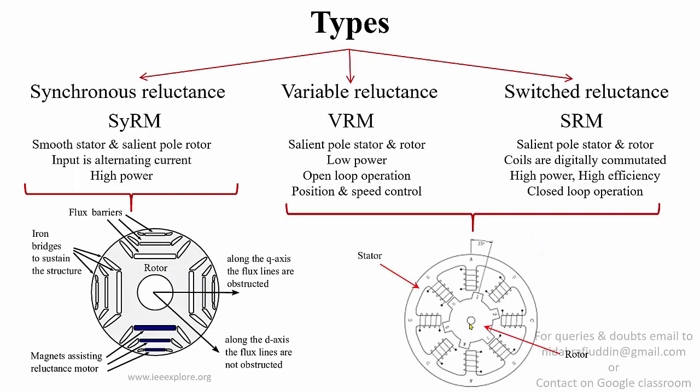Reluctance motors are of three types: synchronous reluctance, variable reluctance, and switched reluctance, abbreviated as SYRM, VRM, and SRM respectively. Each of these has different operating applications. The synchronous reluctance motor has a salient rotor and a smooth stator similar to an induction motor, while both the variable reluctance motor and the switched reluctance motor have salient pole rotors and stators. The synchronous reluctance motor takes AC input and is available at high power ratings. The variable reluctance motor has a low power rating and operates in open loop with no feedback. In the switched reluctance motor, the stator coils are digitally commutated and operation is controlled by a closed-loop feedback system.